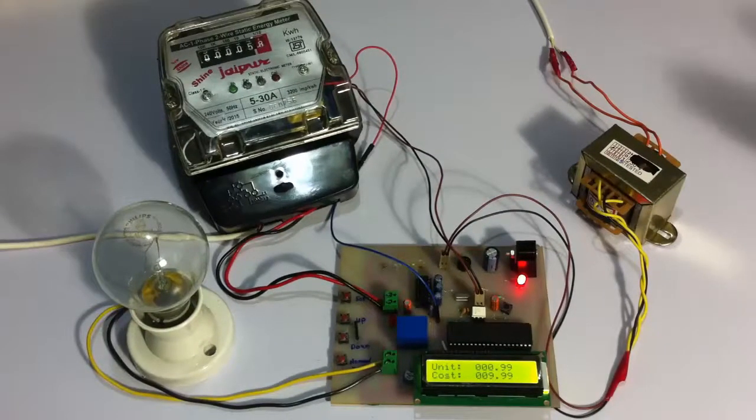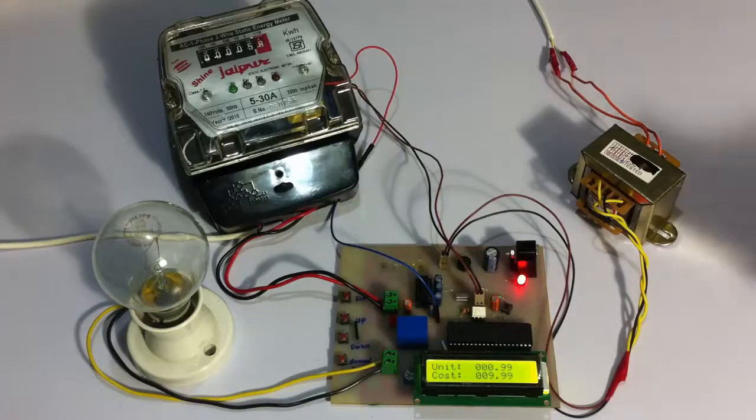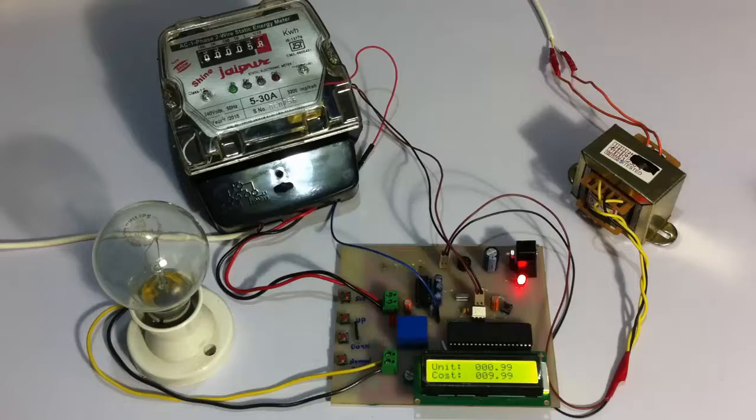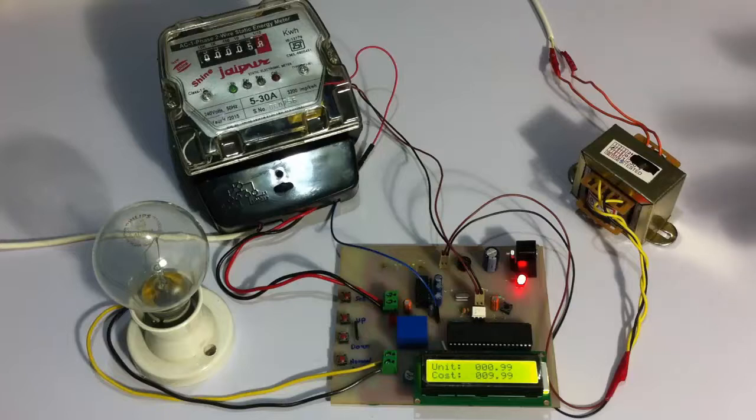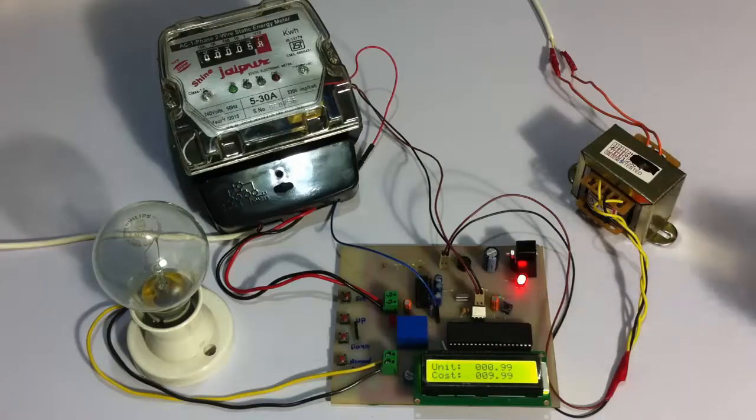So now what we see here is when the bulb was on for a short period it consumed approximately 1 unit, and as we had set per unit consumption to be charged at 10 rupees, the cost is around 10 rupees.